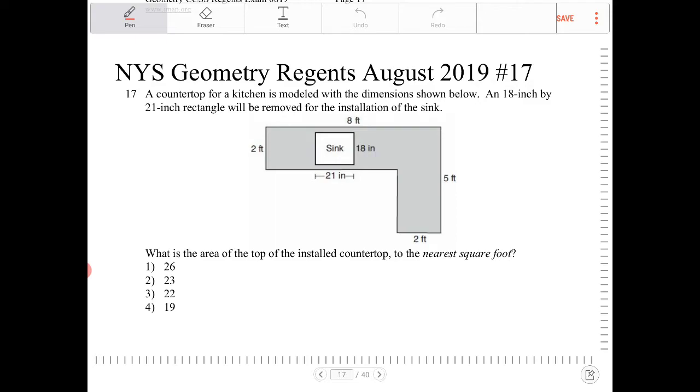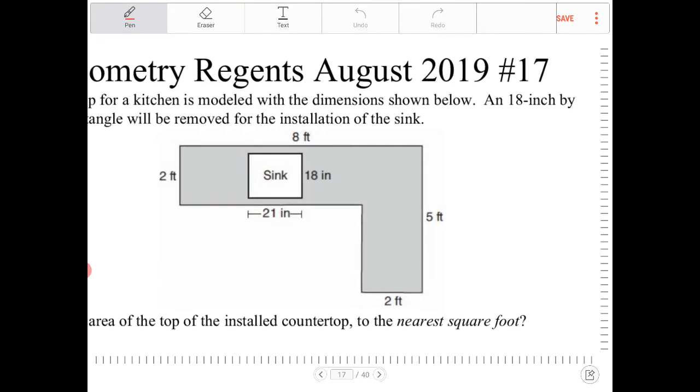So in other words, we're looking for the area of the shaded region. And the best way to approach this is we're going to partition the area into recognizable shapes.